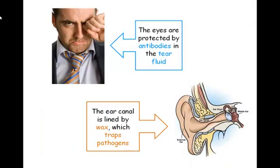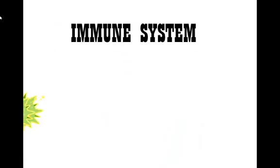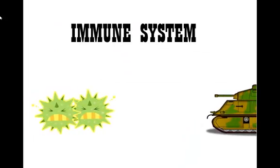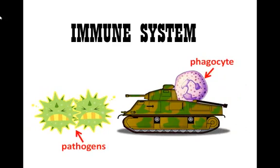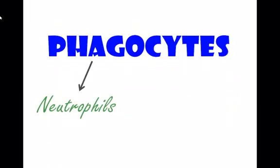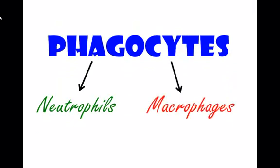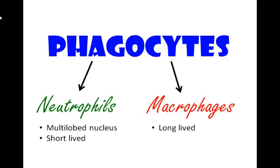What happens if the pathogens dodge those defences and still gain access into the body? That's when the immune system comes into action. If pathogens get through the body's outer defences, they can be destroyed by phagocytes, which come in two types: neutrophils and macrophages. Neutrophils have a multi-lobed nucleus and are short-lived. Macrophages are larger and long-lived, but they are both made in the bone marrow.